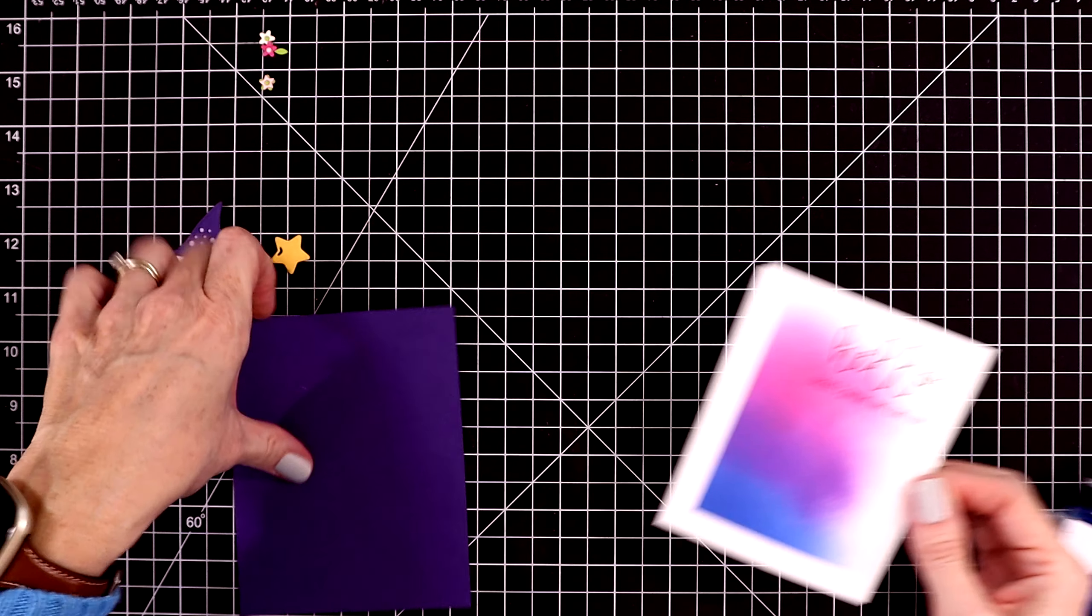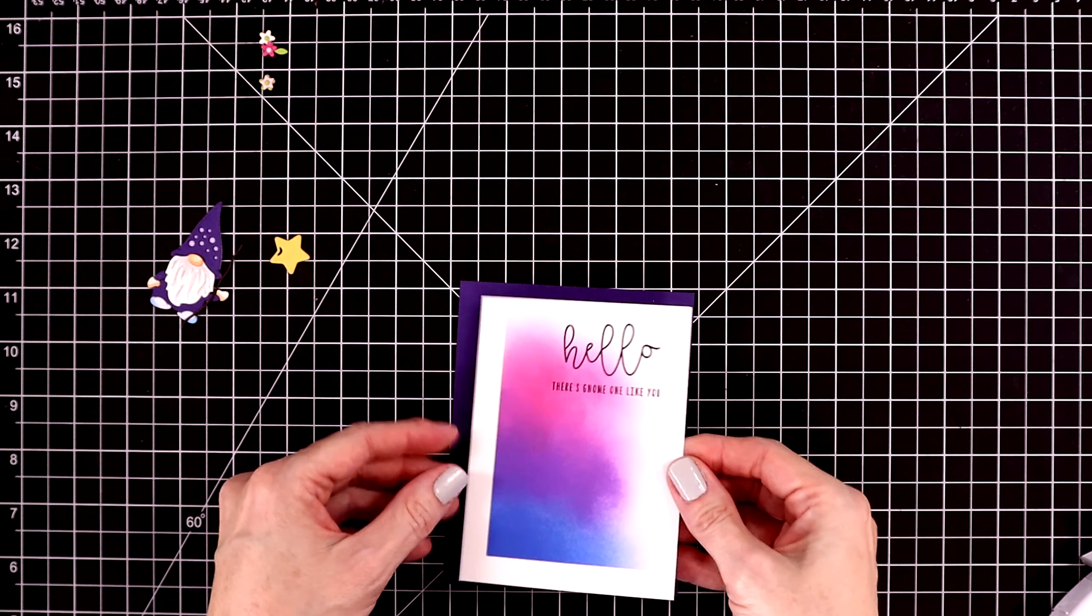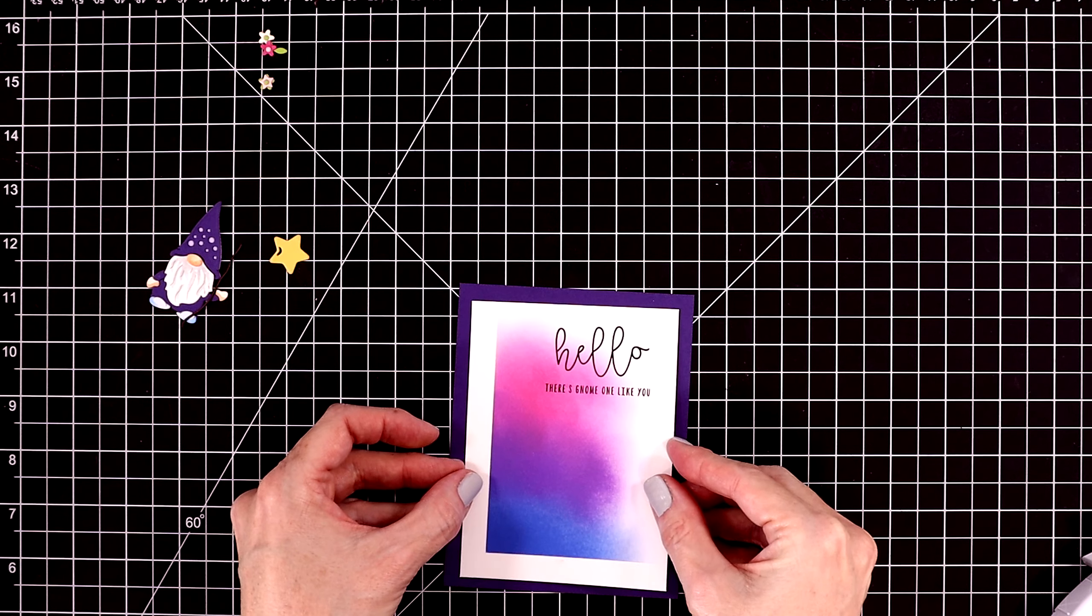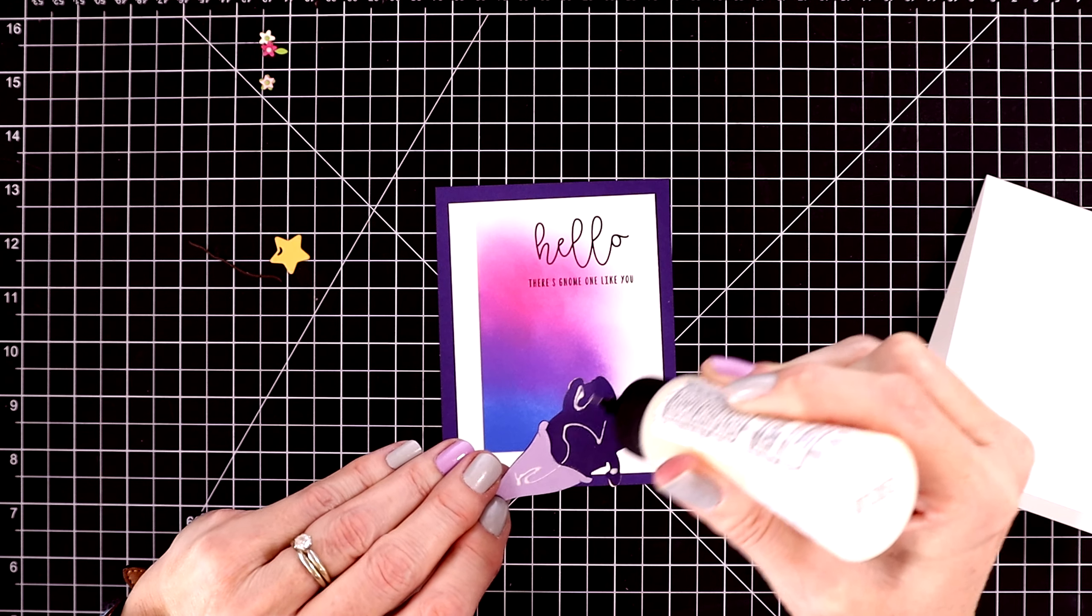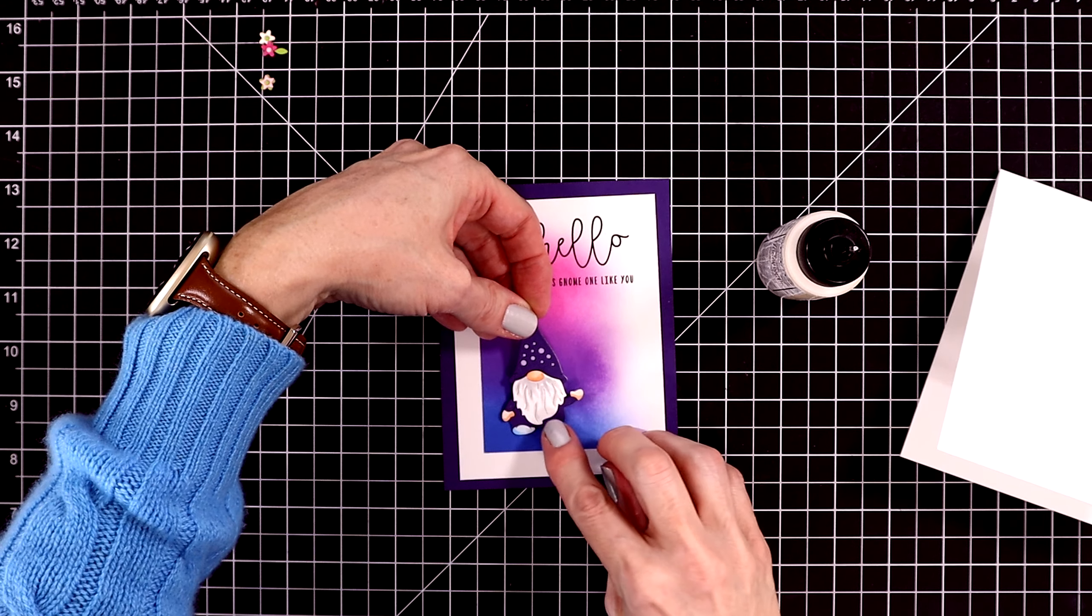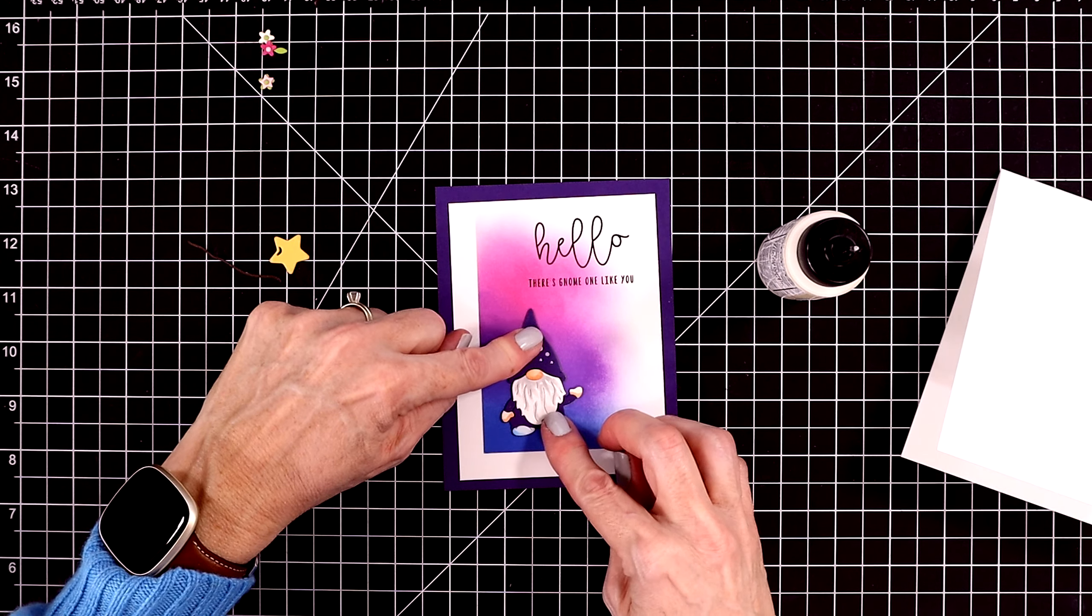I want to mat this panel onto a piece of purple cardstock. This is a piece of Royal Amethyst that measures five and a half by four and a quarter. I'll glue the gnome down flat.